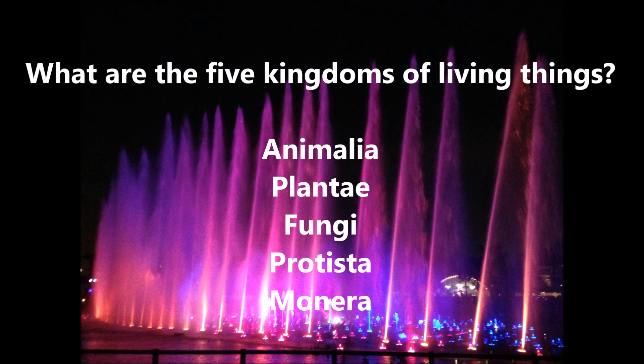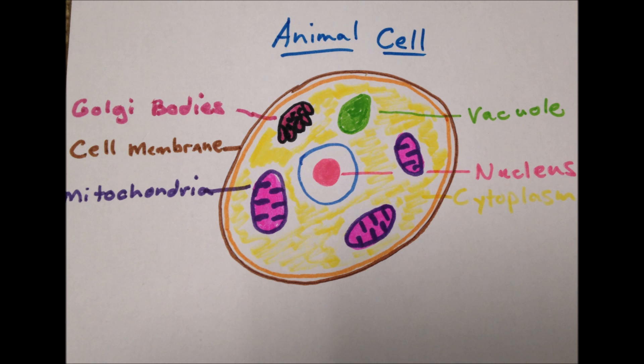What are some parts of an animal cell? Nucleus, cytoplasm, vacuole, mitochondria, cell membrane, and golgi bodies.